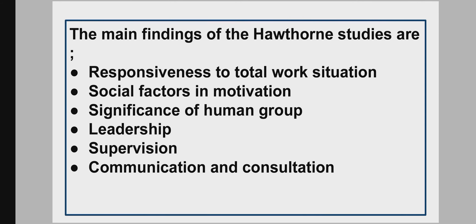The main findings of the Hawthorne studies are: Responsiveness to Total Work Situation, Social Factors in Motivation, Significance of Human Group, Leadership, Supervision, and Communication and Consultation. Responsiveness to Total Work Situation means the study demonstrates that changes in working environment, rest pauses, hours of work, fatigue, incentives, employees' attitude, employees' organization — both formal and informal — and employee-employer relations are all interrelated.